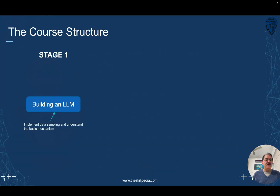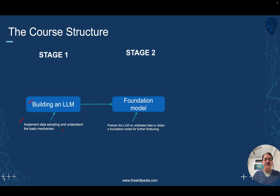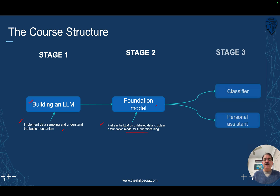The structure of this course is building a large language model in stages. Stage one: implement data sampling and understand the basic mechanism. Stage two: pre-train the LLM on unlabeled data to obtain the foundation model. Stage three: fine-tune the model with a dataset of class labels and also fine-tune separately for an instruction dataset.